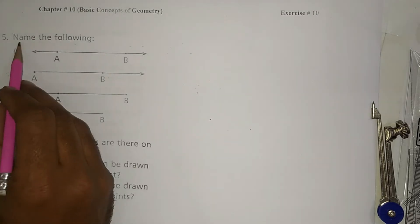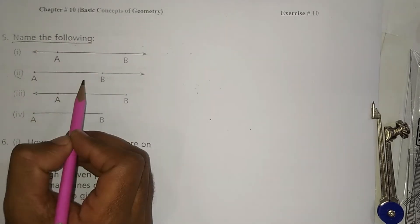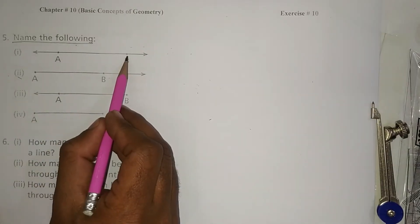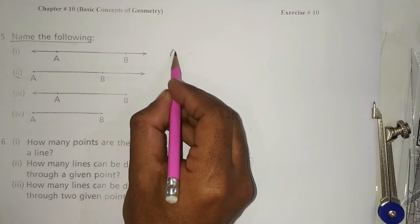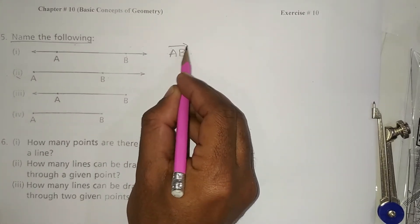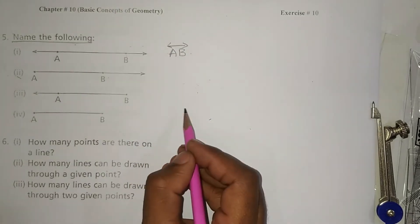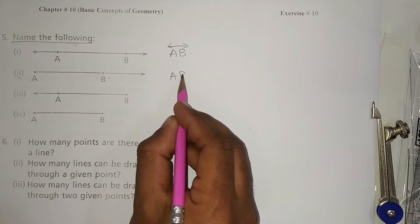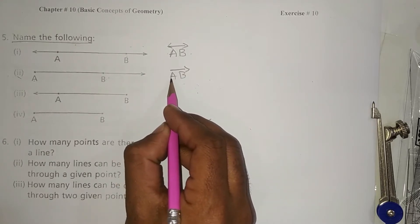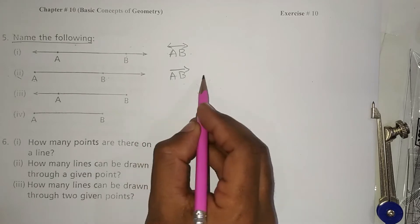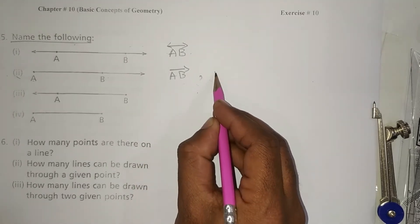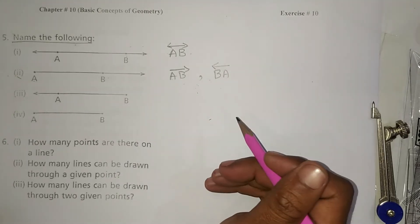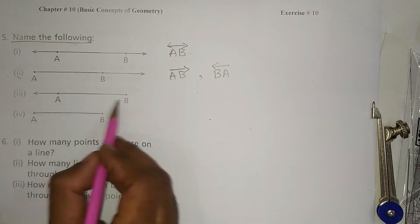In question number five, it said name the following. So for AB line, you can write like this: AB line. For ray, A to B ray. For side, you write the answer like this. You have to pay special attention that you write A first. Because if you write BA instead of AB, then you have to draw like this. Okay, now see this diagram.